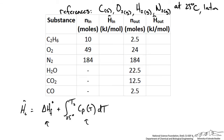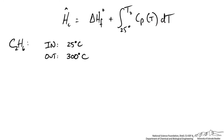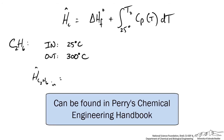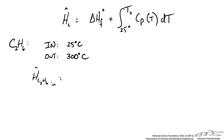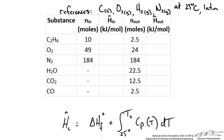Let's start filling in the table with ethane. Ethane enters at 25 degrees Celsius and exits at 300 degrees Celsius. For the enthalpy of ethane entering, it is just the heat of formation of ethane at 25 degrees Celsius, since we are already at the reference temperature the sensible heat difference is zero. Looking this up, the heat of formation of ethane is negative 84.68 kilojoules per mole, so that is the specific enthalpy we plug into our table for the inlet.